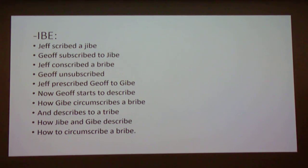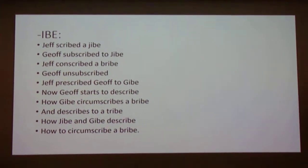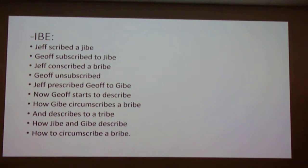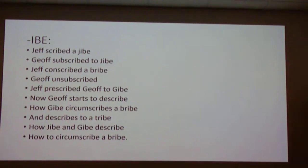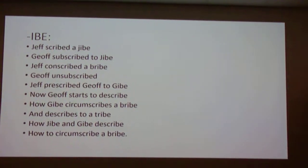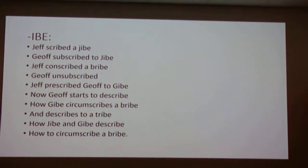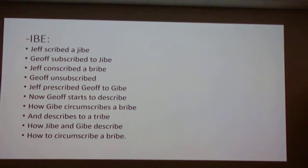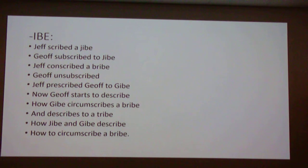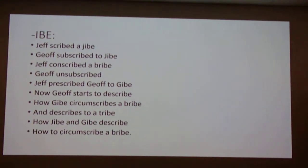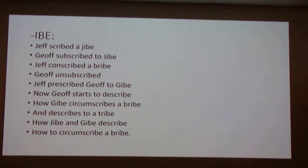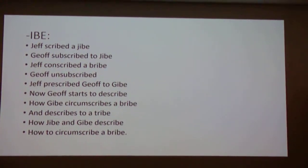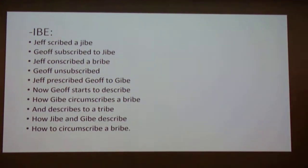The next batch deals with I-B-E. Jeff scrapped a jibe. Jeff subscribed to jibe. Jeff conscribed a bribe. Jeff unsubscribed. Jeff prescribed Jeff to jibe. Now Jeff starts to describe how jibe circumscribes a bribe and describes to a tribe how jibe and jibe describe how to circumscribe a bribe.